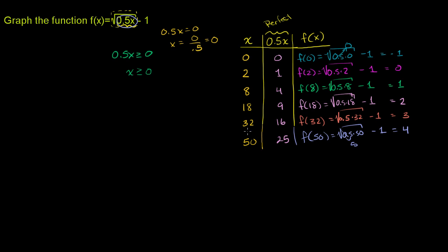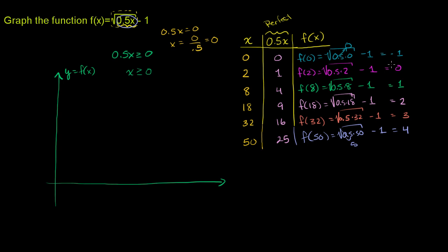Now that we've figured out f of x at each point, we're ready to plot. Let me draw axes — the x-axis and y-axis, where y equals f of x. The x-axis goes to 50, so let me mark 10, 20, 30, 40, and 50. The y-axis needs to go between negative 1 and 4, so let me mark negative 1, 1, 2, 3, and 4.